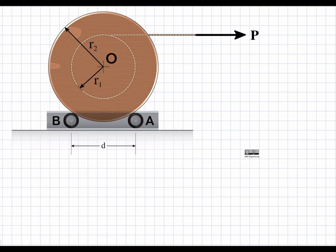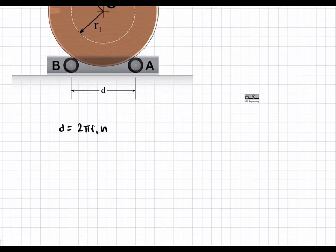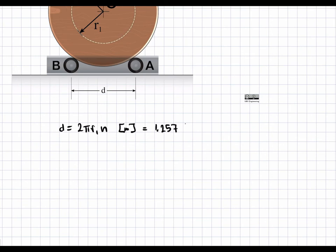We can come up with a function for the displacement of the rope. The displacement d is equal to 2π·r1 times n, where n is the number of revolutions — because one circumference corresponds to one revolution. This is what we are trying to solve for, and it has units of meters. Plugging in r1, we get that d equals 1.257n meters.